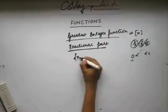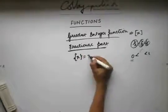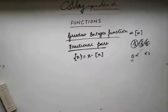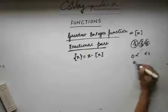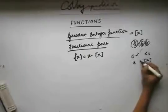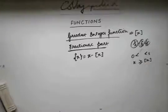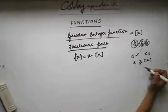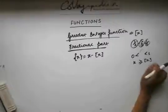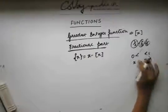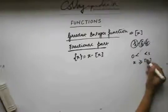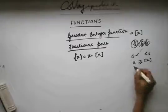The fractional part is denoted by curly braces and we write it as x minus box of x. This is how a fractional part is defined. Now, you know that x is always greater than or equal to box of x. This is because if x is an integer, then box x equals x. If x is not an integer, to find box x we take the integer which is less than x but is the greatest integer less than x. So this condition is always true.